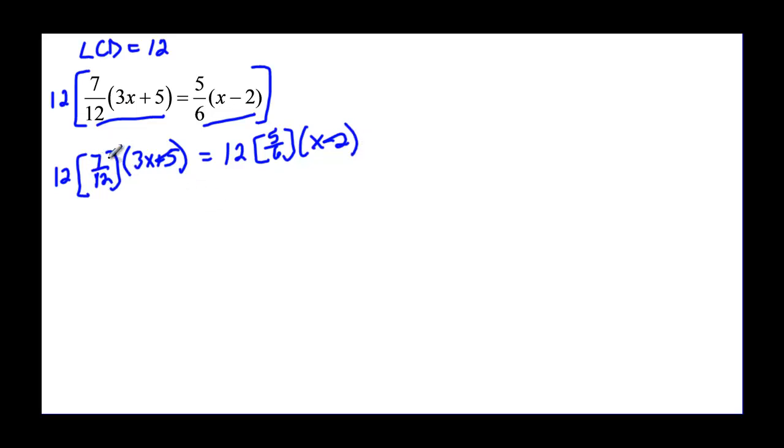Here is my 7 over 12 times 3x plus 5, but the reason why I put this in parentheses is because we can multiply two things at a time. So I am going to take these first two because my 12s become a factor of 1, and now I have 7 times 3x plus 5. I can reduce this 6. The 6 goes into 12 2 times, so now I have 2 times 5 times that x minus 2, so it's really going to be 10 times x minus 2.